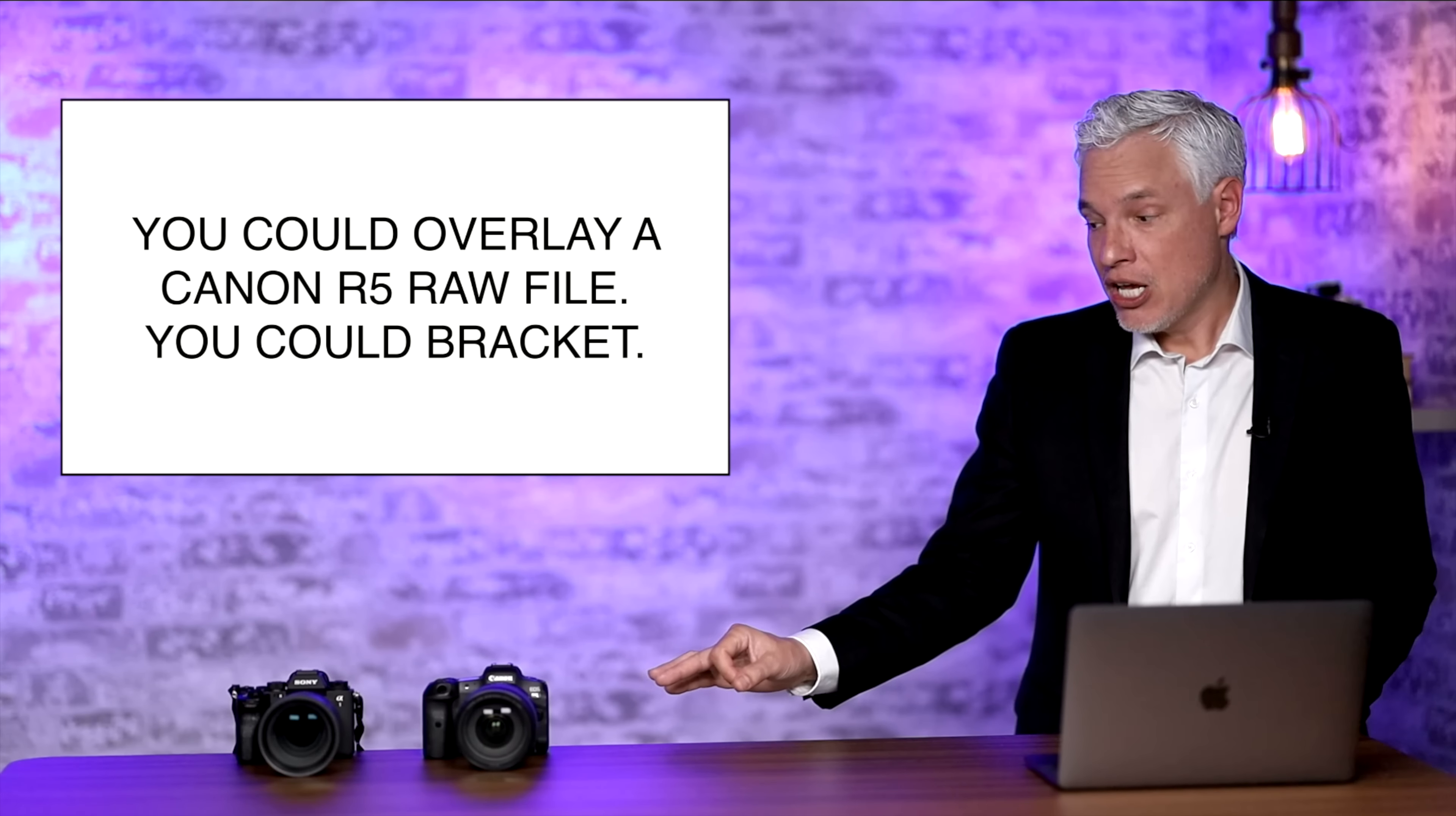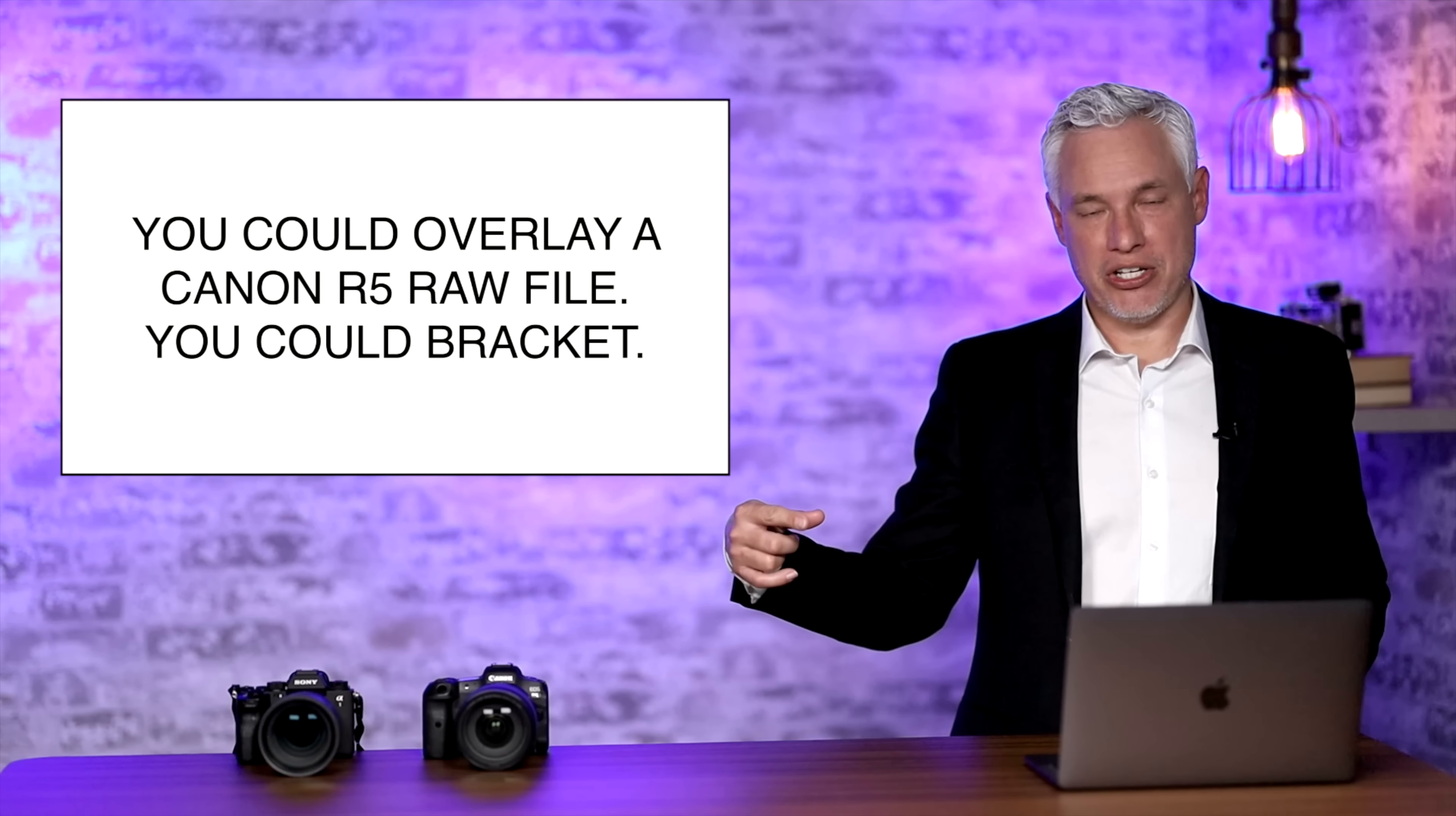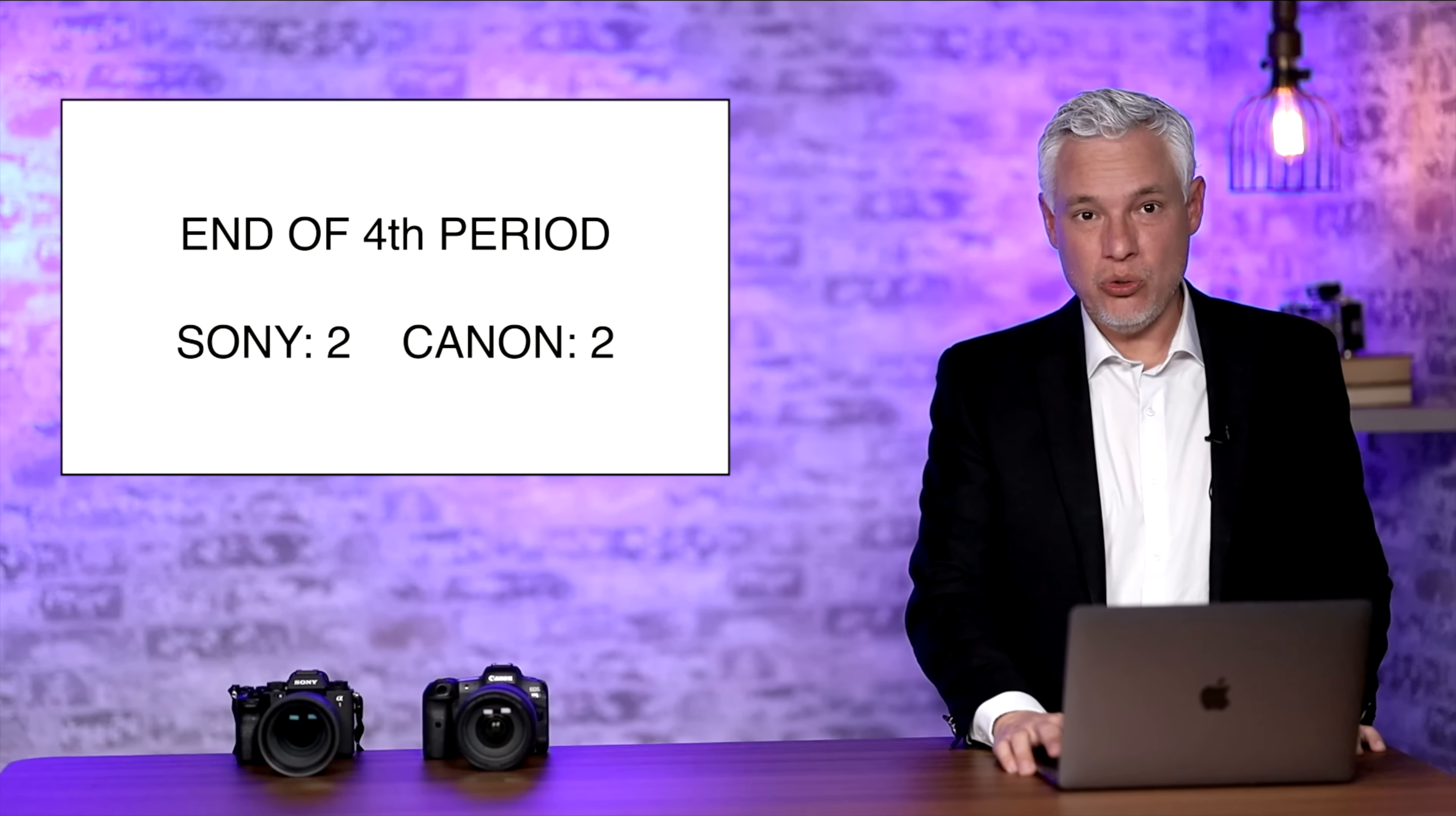Now there are ways to work around this. You could bracket your images. Take pictures at negative two stops, zero stops, and plus two stops of exposure and then combine them in something like Lightroom. That works great but Canon doesn't allow bracketing when you're using the IBIS high-resolution shot mode. So you could still do it. You could just manually adjust the exposure up and down and take three or five shots and then combine them. That would get you the extra dynamic range but now you have probably five 400 megapixel files that you need to combine. So this is a big point for the Canon. I probably should give the Canon more points but right now we're tied at two and two.